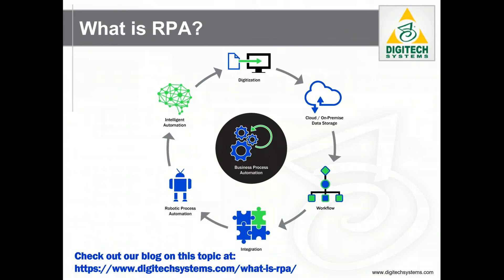We'll get to intelligent automation in just a minute. Essentially, it's the future of RPA. IA makes use of artificial intelligence to enable automation of non-standard business processes that may include structured, semi-structured, and even unstructured information.